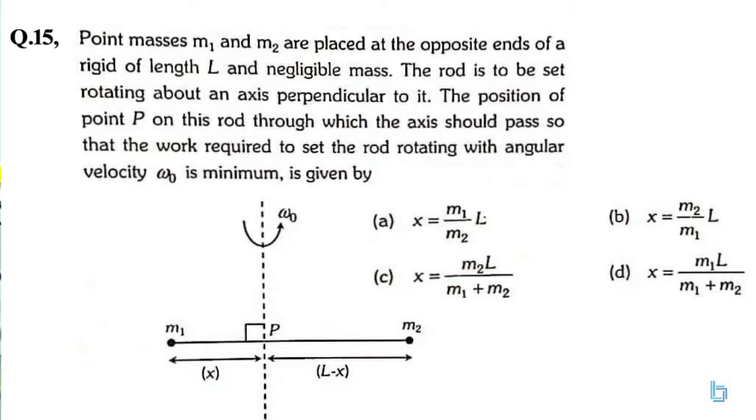The position of the point P on this rod through which the axis should pass so that the work required to set the rod rotating with angular velocity ω₀ is minimum is given by: